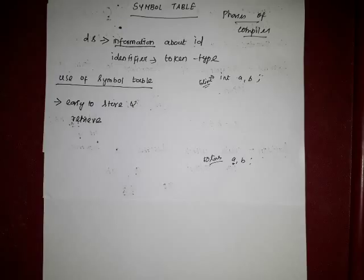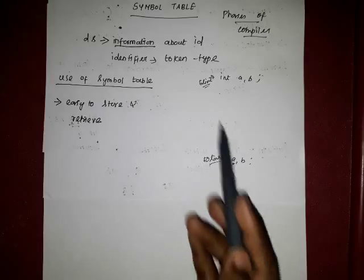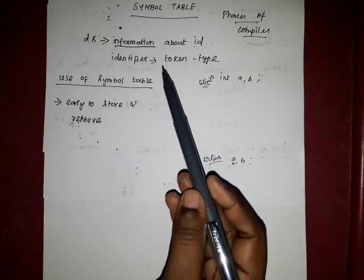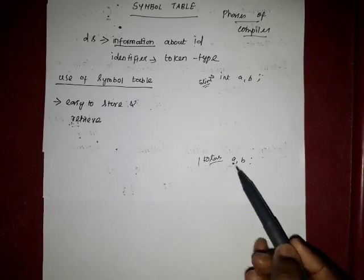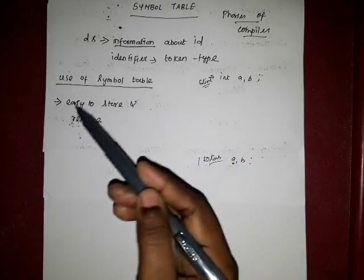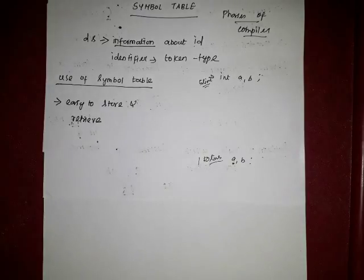For example, throughout the six phases, the compiler uses the symbol table as shown in the diagram. Throughout all six phases, the symbol table is connected to each phase, collecting and providing identifier information. The main aim of the symbol table is to store and retrieve identifier information efficiently, improving running time and execution speed.